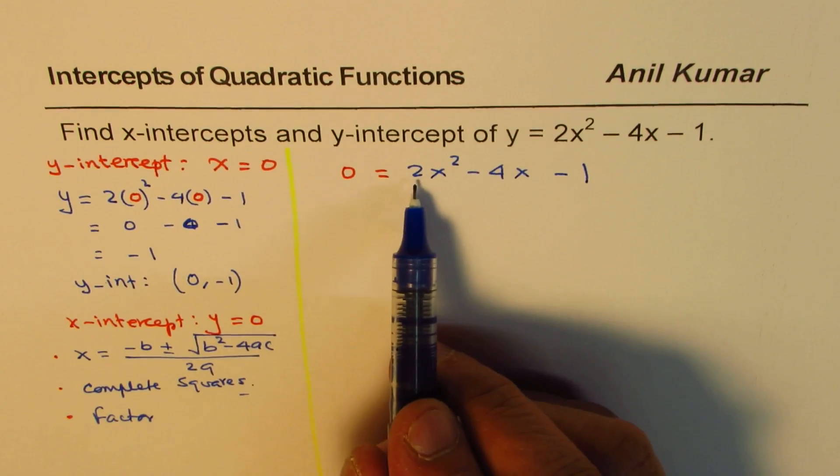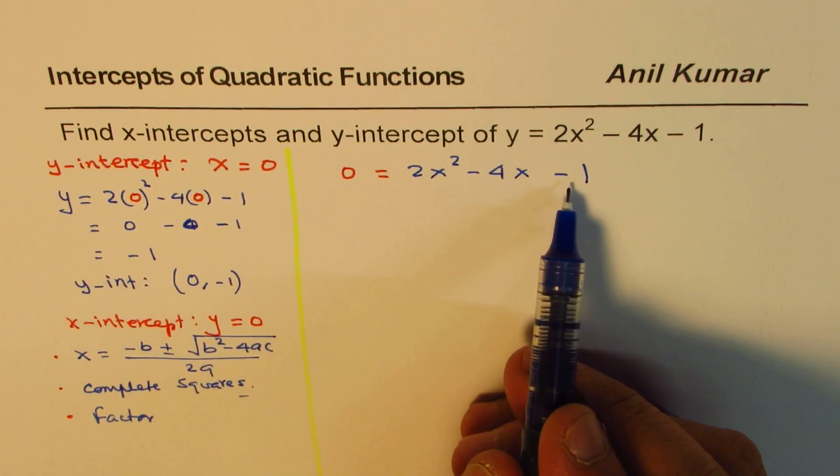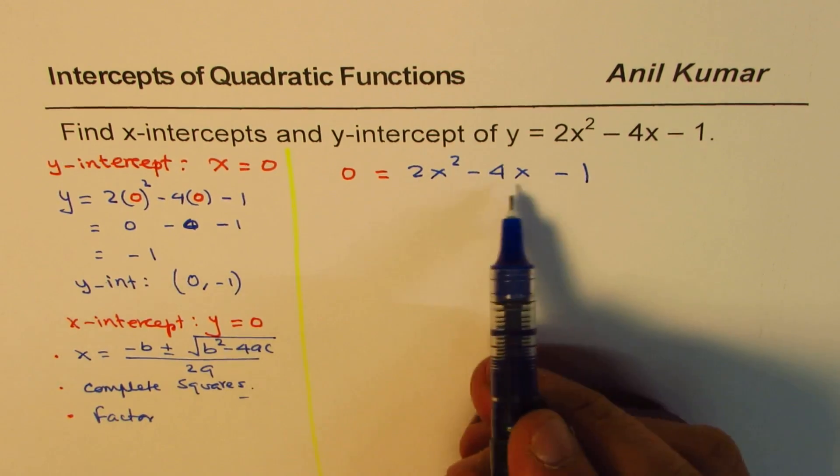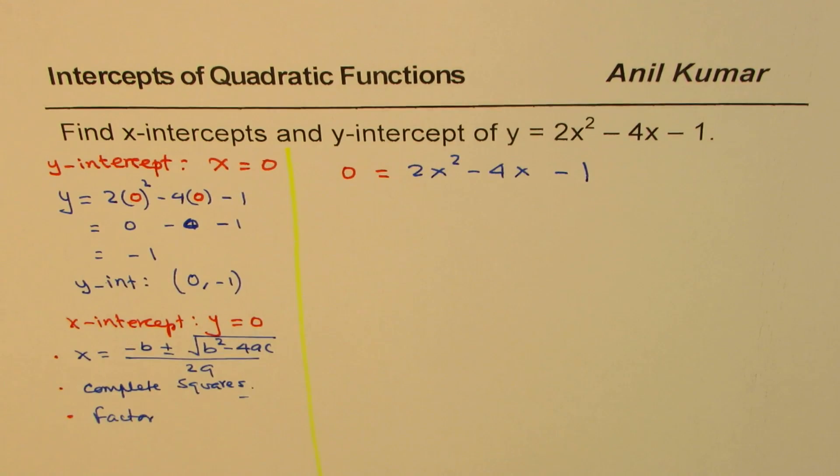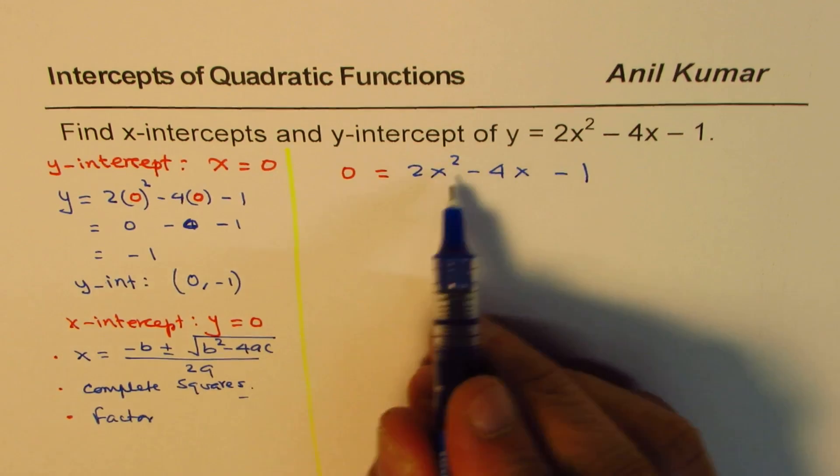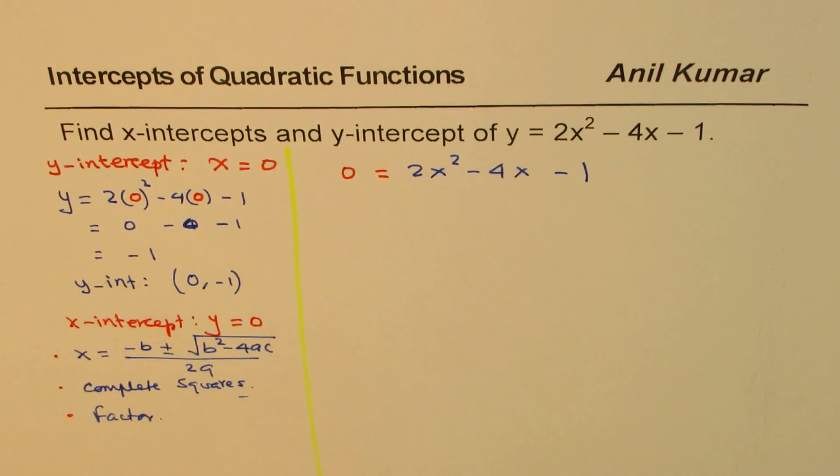If you try factoring here, 2 times minus 1 is minus 2. And to get minus 2 as product, 2 and 1 is the only combination, we cannot get minus 4. So this cannot be factored. So that option is not there.